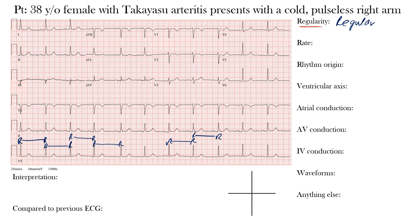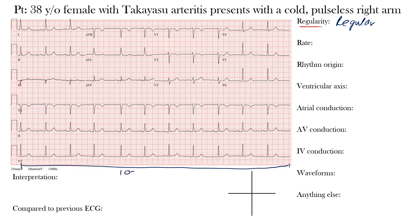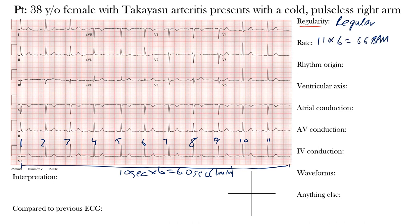Now, what did you get for the heart rate? Since this is a regular rhythm, there are a couple of ways to figure it out. One way is to count the number of ventricular complexes across the EKG and multiply by six, because the standard 12-lead EKG represents 10 seconds. Multiplied by six gives 60 seconds, or one minute. Counting across: one, two, three, four, five, six, seven, eight, nine, ten, eleven — eleven times six is 66 beats per minute. That's our estimate of the rate.